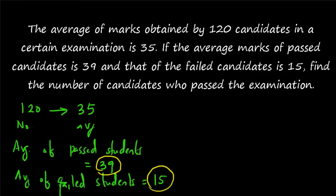When such a situation comes, you can think about the principle of allegation to be applied here. Whenever a combination comes — whenever two things combine together to form a total — you can think about the principle of allegation. Here, the average of passed students is 39 and the average of failed candidates is 15. When combined together, you get the total average, which is 35.